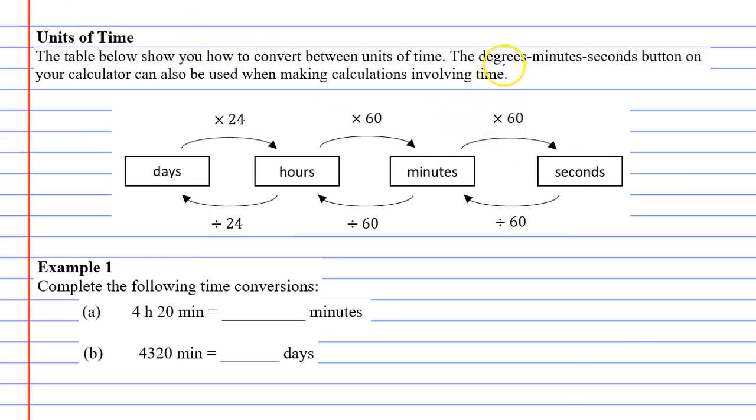As a side note, on your calculator there is a degrees-minutes-seconds button if you have a scientific calculator, and this can be used when making time calculations. It won't be useful for the calculations we're making today, but it's useful when you're adding or subtracting times.